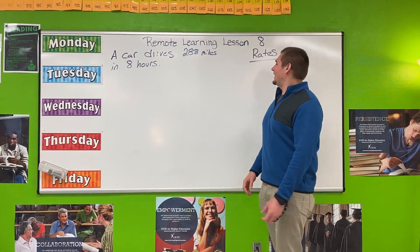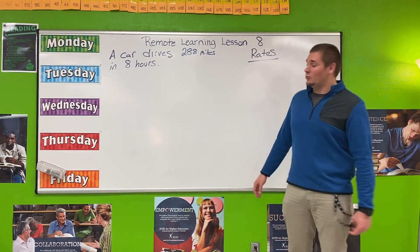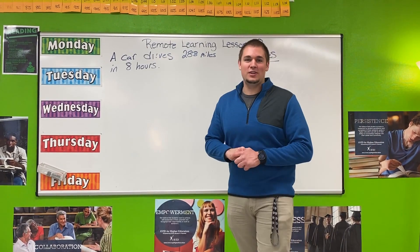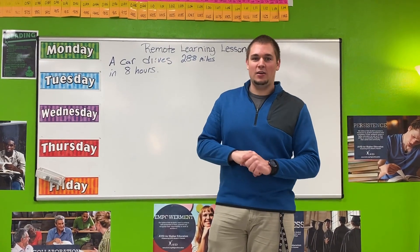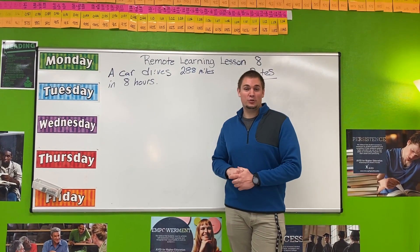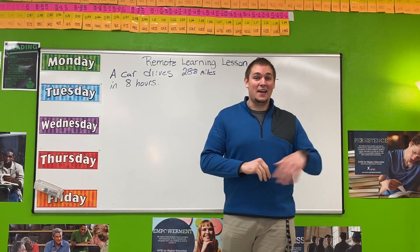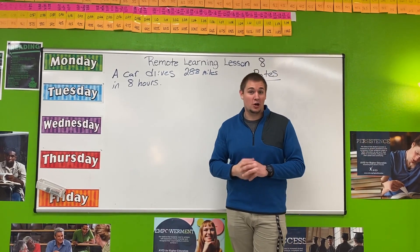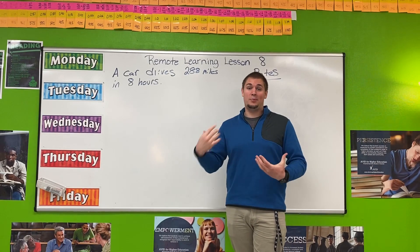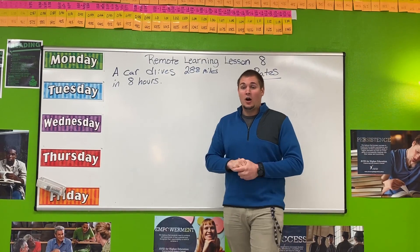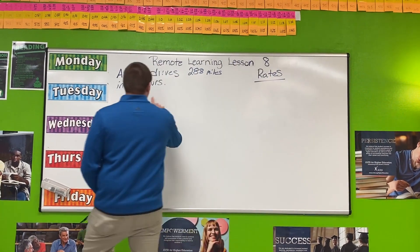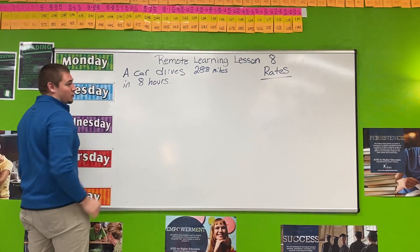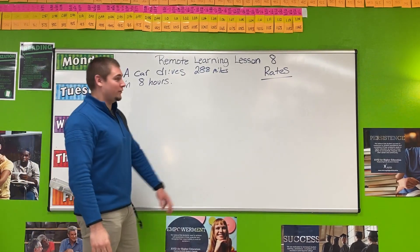Welcome back to remote learning lesson number eight. We are going to be talking about rates. Rates are something that we use in an everyday world. For example, we can go to the grocery store and buy 10 apples for $2 and we can figure out how much it costs per apple. Notice how I said 'per.' So we're going to use the example: a car drives 288 miles in eight hours. That is an example of a rate.